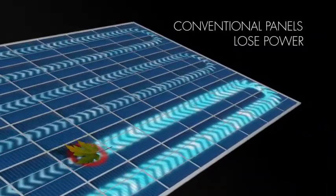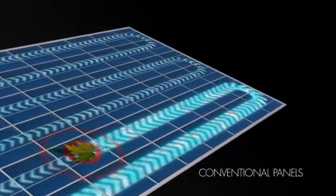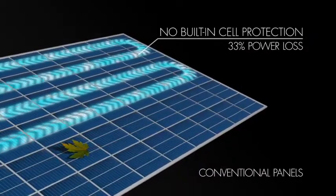When a conventional panel is shaded, it does not allow electricity to pass, even if there is only one cell being shaded. The panel loses a third of its energy output.